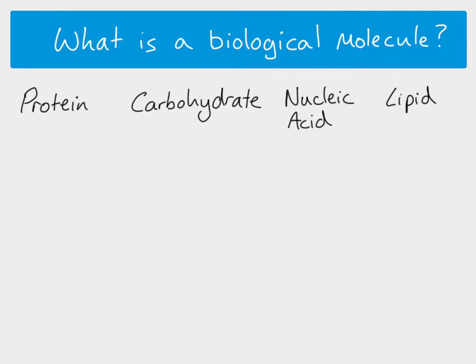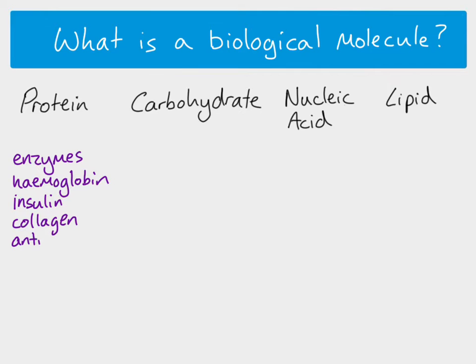So we have four main groups, and there are lots of examples of these biological molecules that you already know. All enzymes are proteins. Other examples include hemoglobin, insulin (which is a hormone), collagen, and antibodies — those are just a few of the many examples of specific protein molecules or groups of proteins.